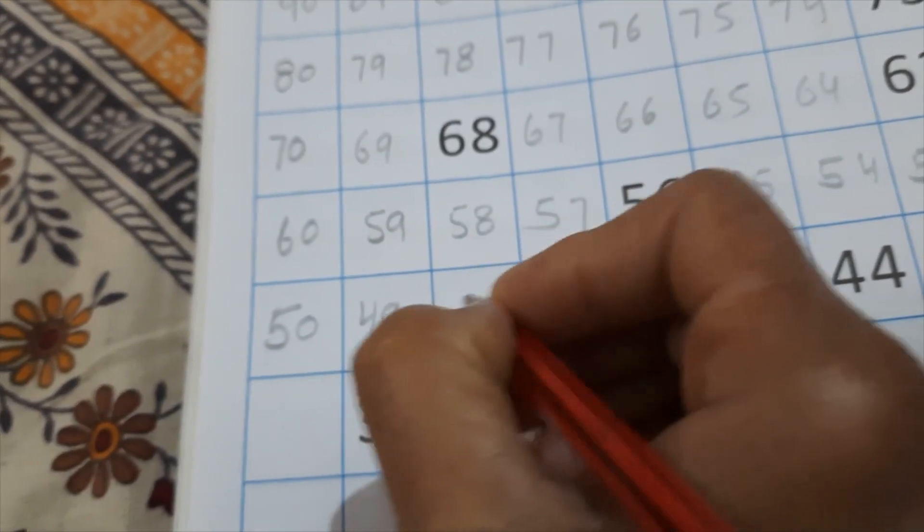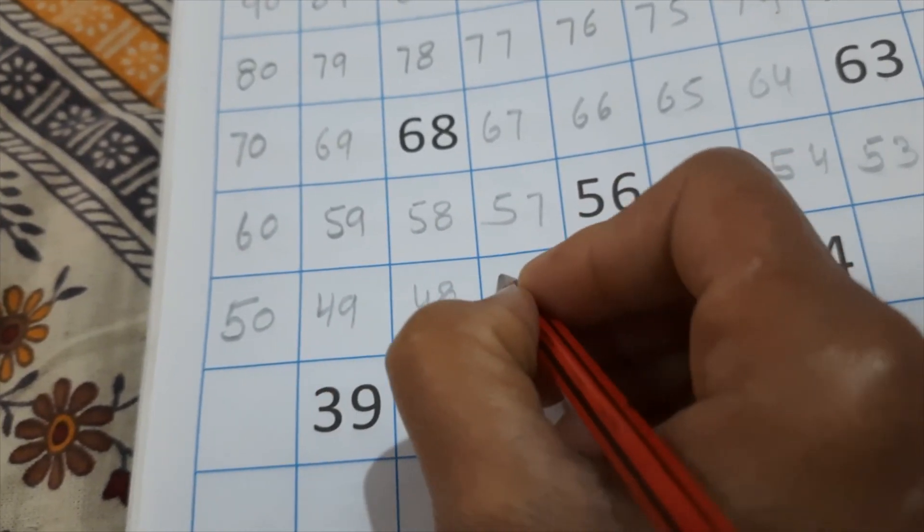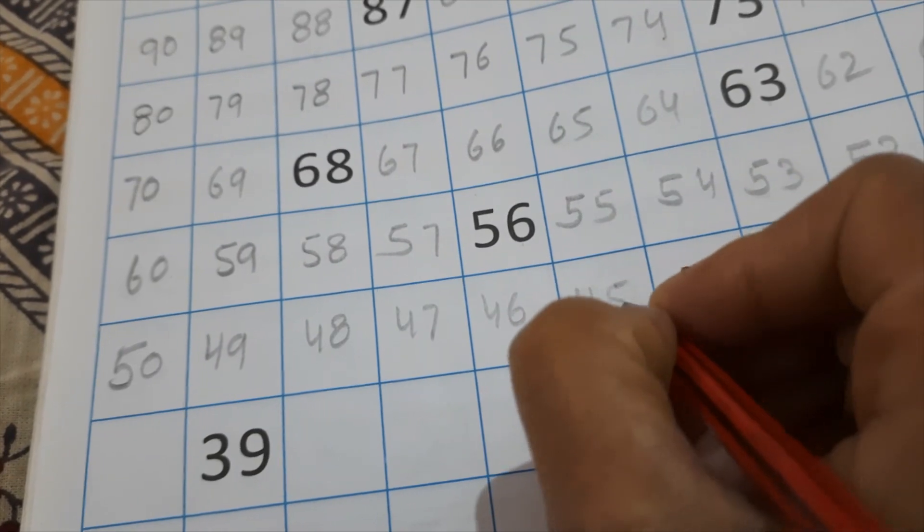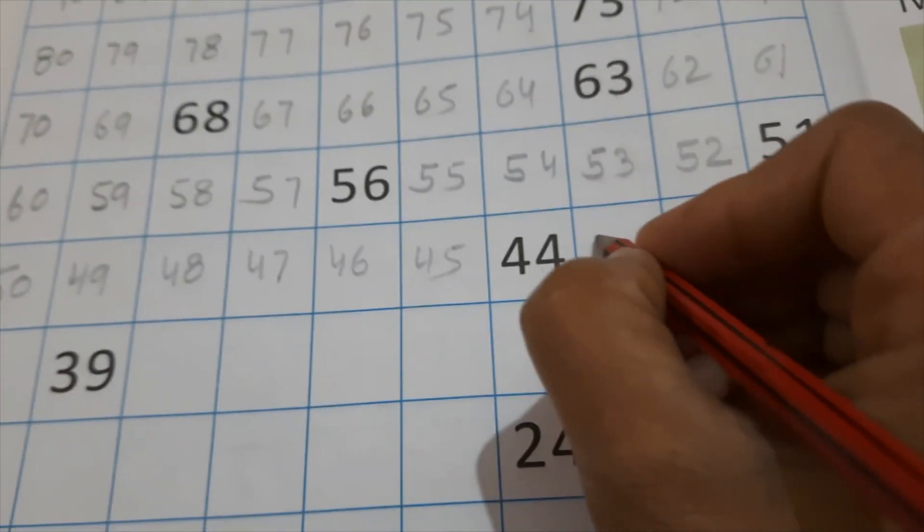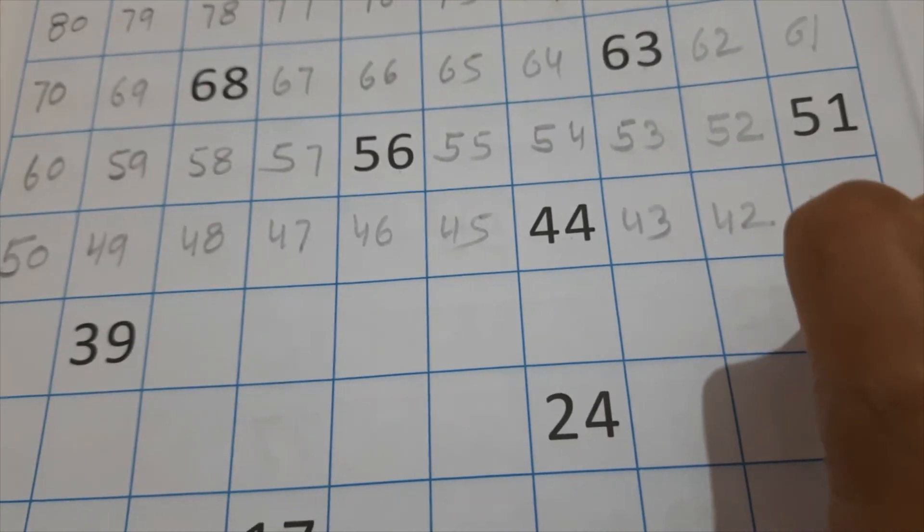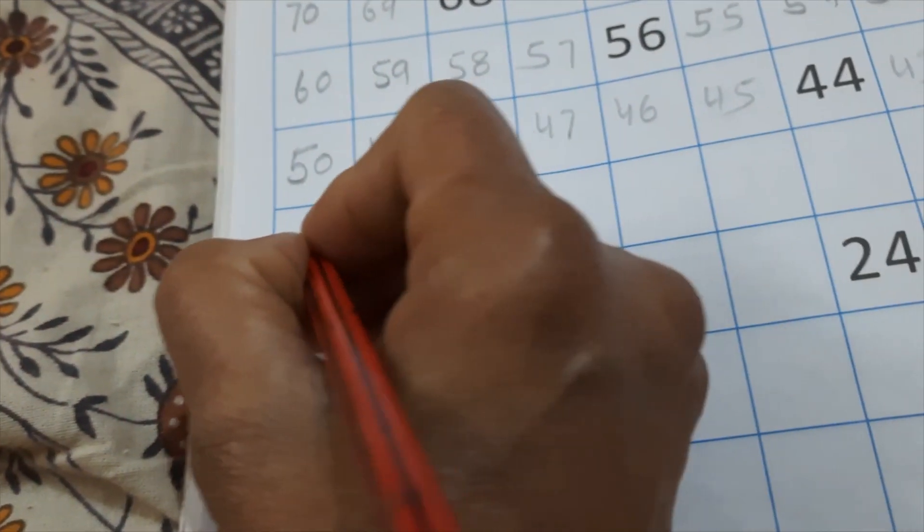49, 48, 47, 46, 45, 44 is already right. 43, 42, 41. Next. 40.